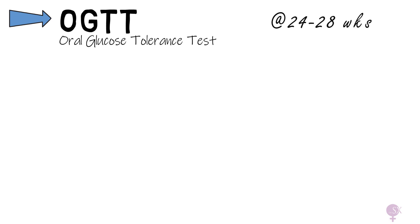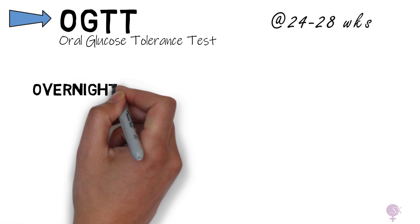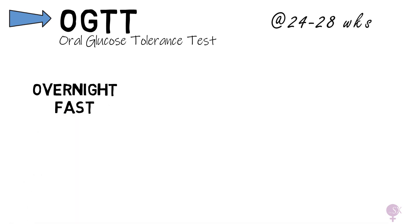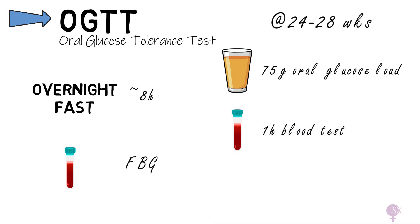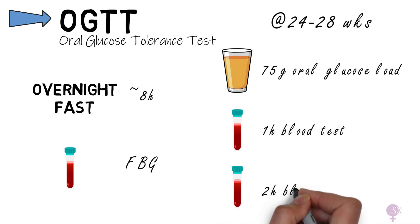What does this test involve? The patient is first asked to fast overnight. The next morning, they will first have a blood test taken checking their fasting blood glucose level. Then they will drink a sugary drink containing 75 grams of oral glucose, and then have blood tests repeated 1 hour and 2 hours after the drink, to assess how much glucose remains in their bloodstream.